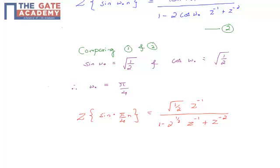So we can say that Z transform of sin(π/4 times n) equals square root of 1/2 Z^(-1) divided by 1 minus square root of 2 Z^(-1) plus Z^(-2).